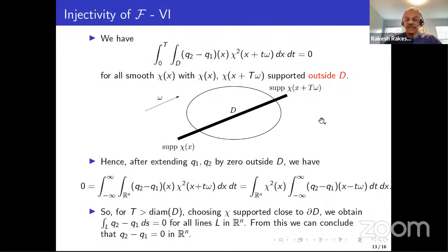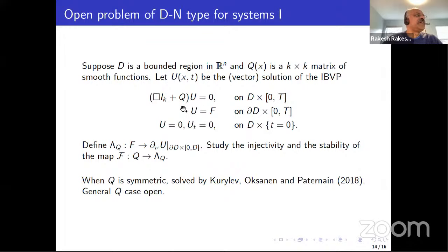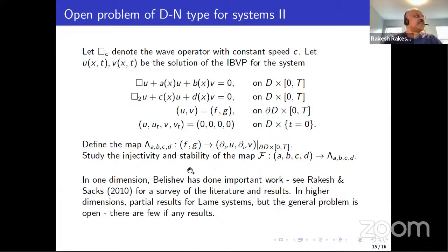I don't have time to talk about open problems in detail, but one direction is replacing the scalar Q with a matrix Q — and systems with two different sound speeds. Work on these has been done by Belishev and Professor Ismailov, who's listening to this talk. He's done work on a one-dimensional version. The slides have all the references. Thank you.